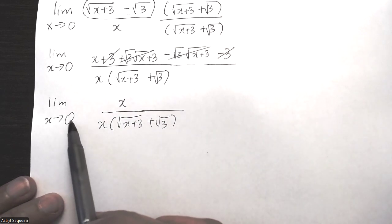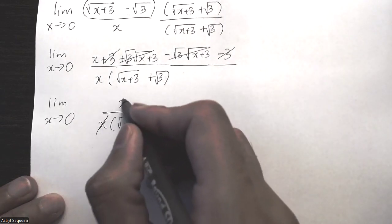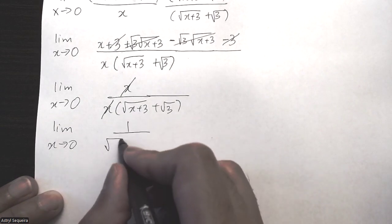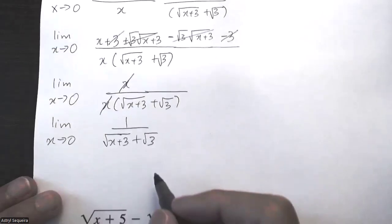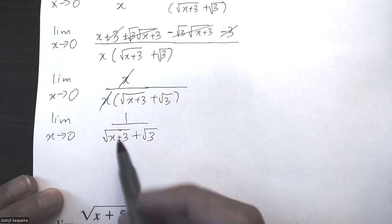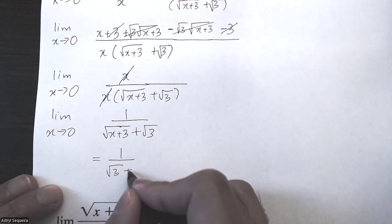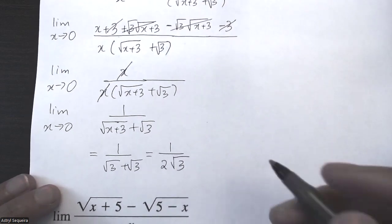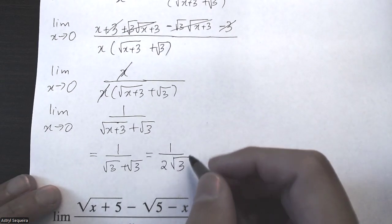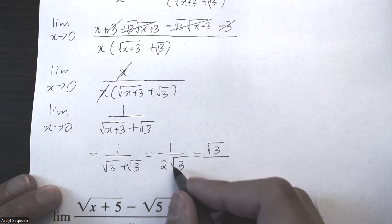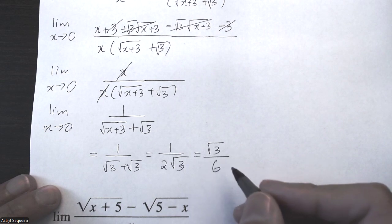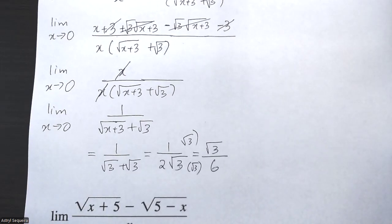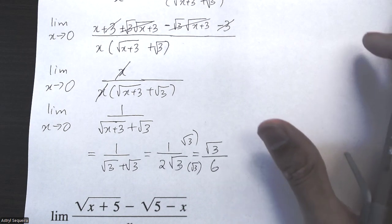Once I do my cancellation of the x's, I'm just left with one over root x plus three plus root three. Now I can sub in my limit of zero, so I'm left with one over root three plus root three, which is one over two root three. If you need to rationalize, you multiply the top and bottom by root three, so you'd have root three over root three times root three is three times two, which is six — giving root three over six. But in some courses that final rationalization step isn't one hundred percent necessary.